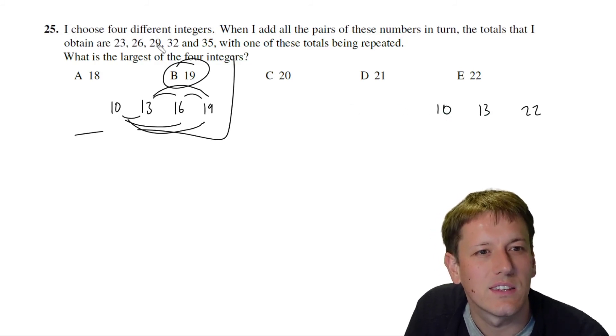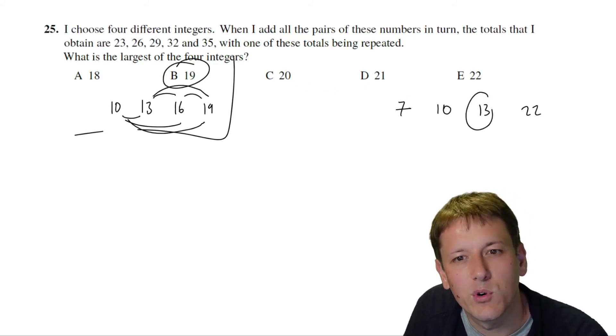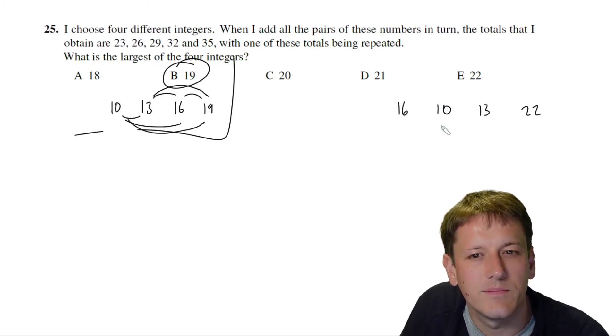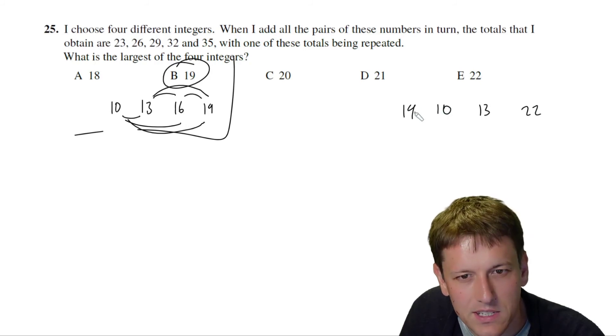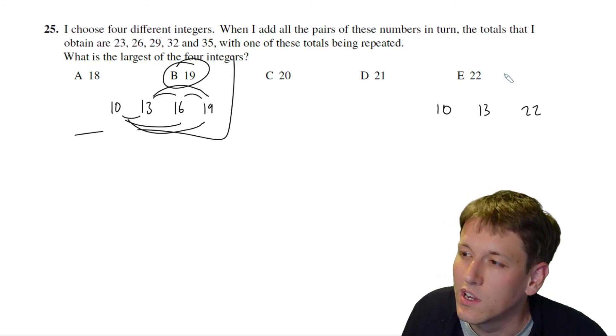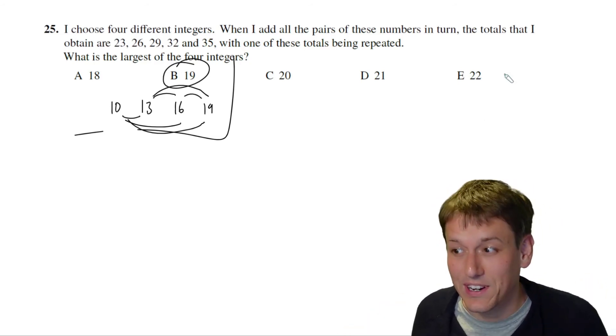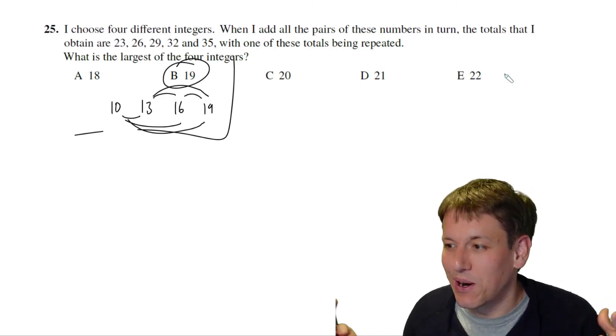So this is looking slightly more promising. I've got the 32 and I've got the 23 here. Now to get the 29, I could either do 22 and 7, but then 10 plus 7 isn't in there, or I could do 13 plus 16, but now 16 plus 22 isn't in there, or I could do 10 plus 19, but again 19 plus 22 isn't in there. So you know, you can actually eliminate all of the other options pretty quickly compared to the amount of rigor that was required to do the other one.